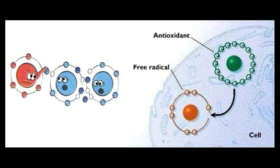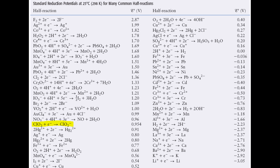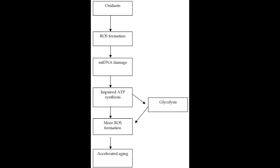In basic terms, redox potential shows the tendency of a chemical to steal electrons from other chemicals. The higher the number, the better it is at stealing electrons, and the more negative the number, the more likely it is to lose electrons. Chlorine dioxide has a redox potential of 0.95. A high redox potential is what makes a chemical a strong oxidizer. When a chemical with a high redox potential steals electrons, this can damage the molecules whose electrons are being stolen. It could even result in a chain reaction of damage until the body manages to stop it in its tracks.